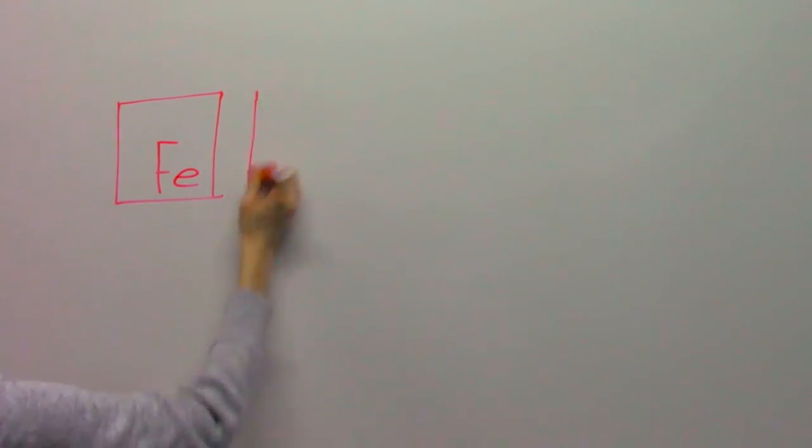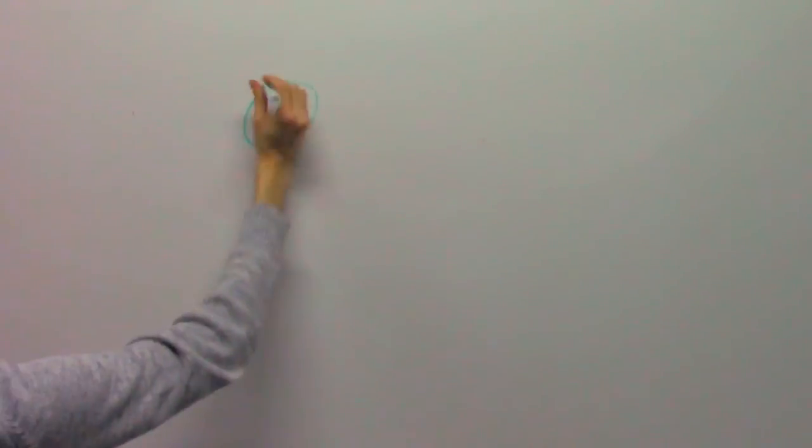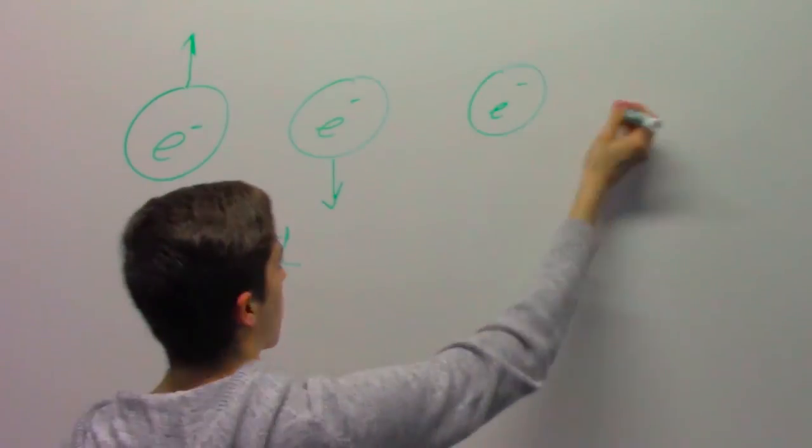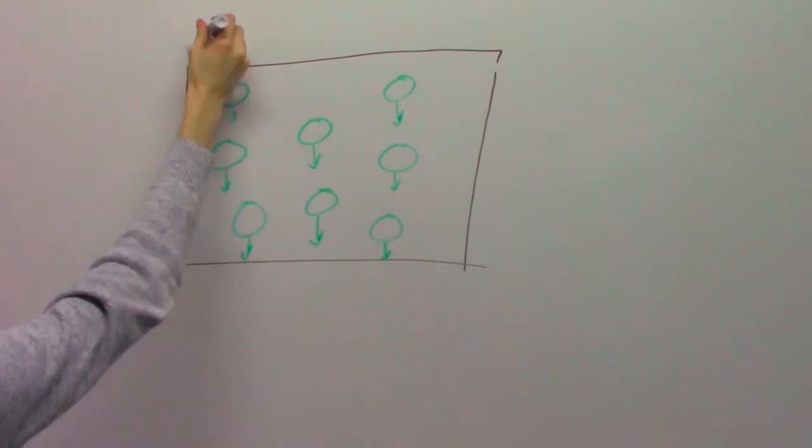But what about magnets that don't come from electric currents? This type of magnetism is caused by electrons in metals like iron, cobalt, and nickel. Electrons have a property called spin. There are two types of spin, up and down. Pairs of electrons must have opposite spin, but unpaired electrons can have the same spin. When many unpaired electrons have the same spin, the result is magnetism.